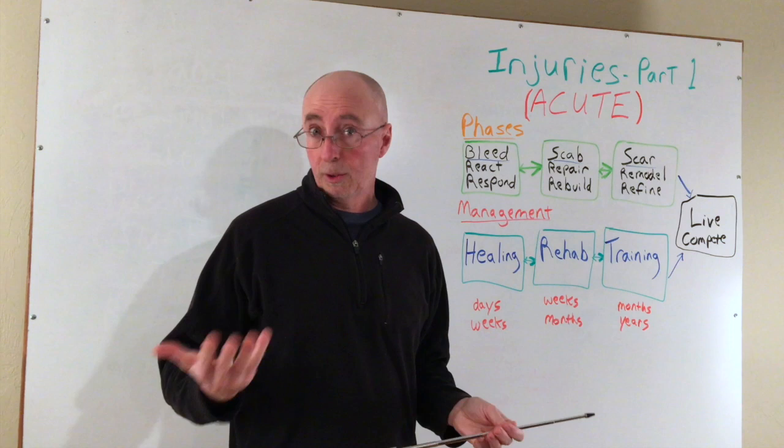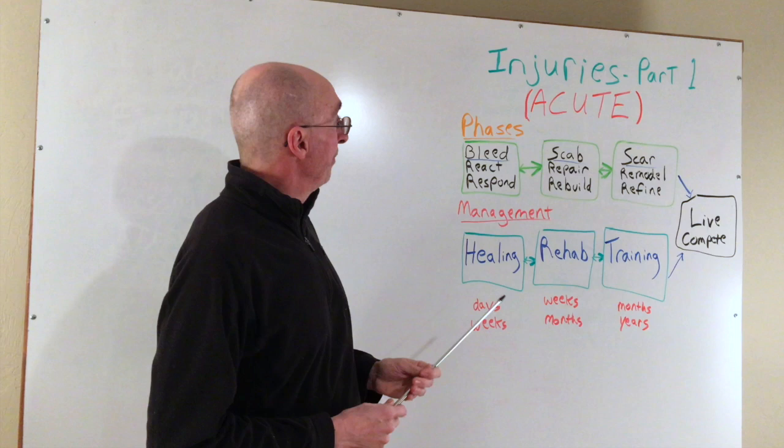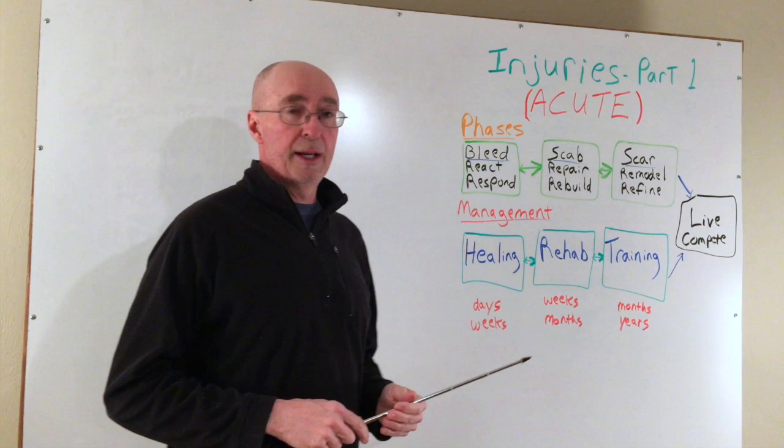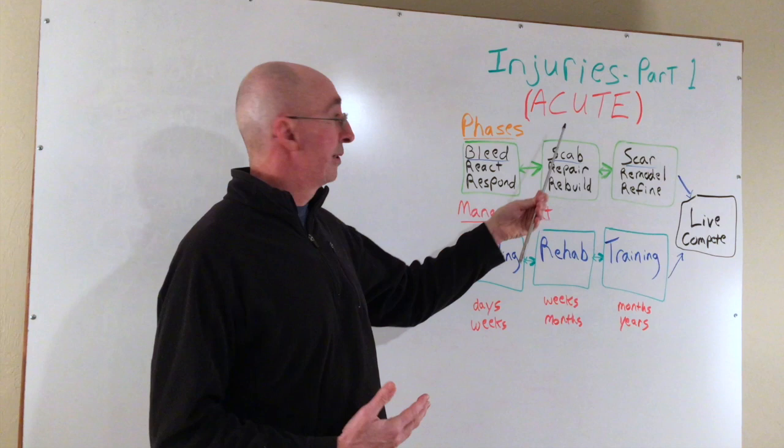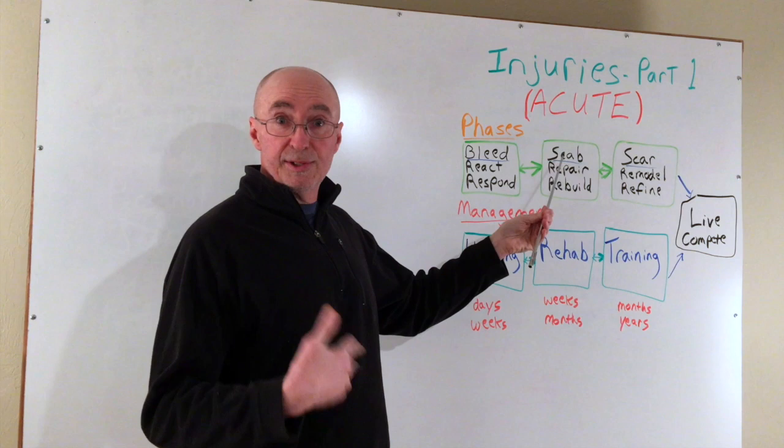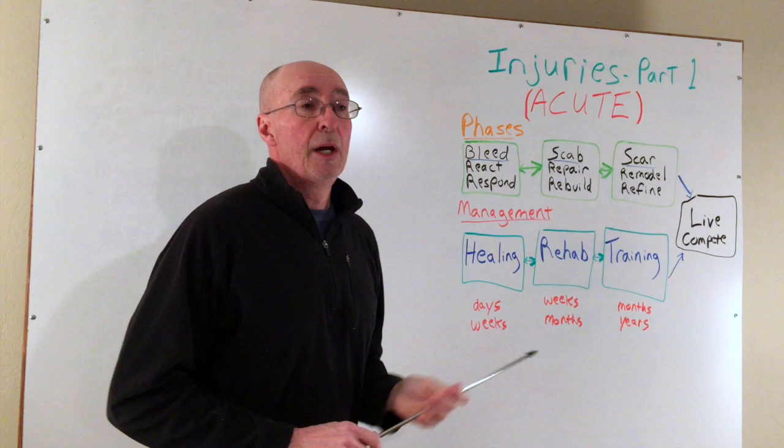When we have an acute injury — and that could be anything such as turning your ankle, spraining the ankle, or a myriad of other types of injury — the body goes through three phases of healing or recovery. They do have some fairly official names, but I like to use terms that make sense. The first phase when we have an acute injury is bleeding in the tissues, followed by scab formation, and also scar.